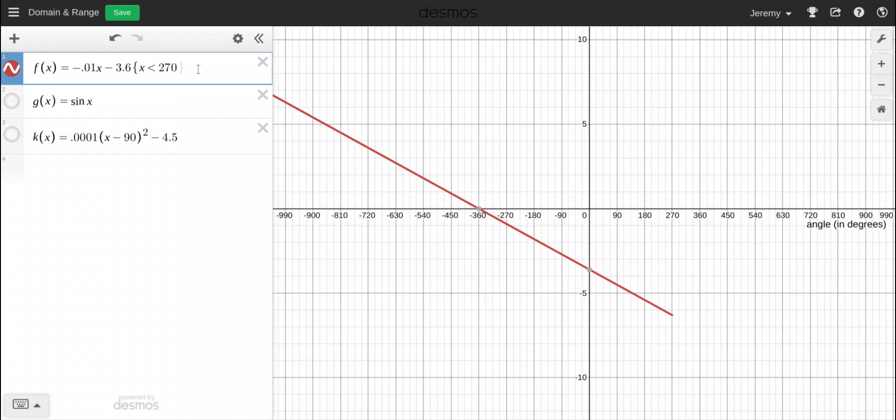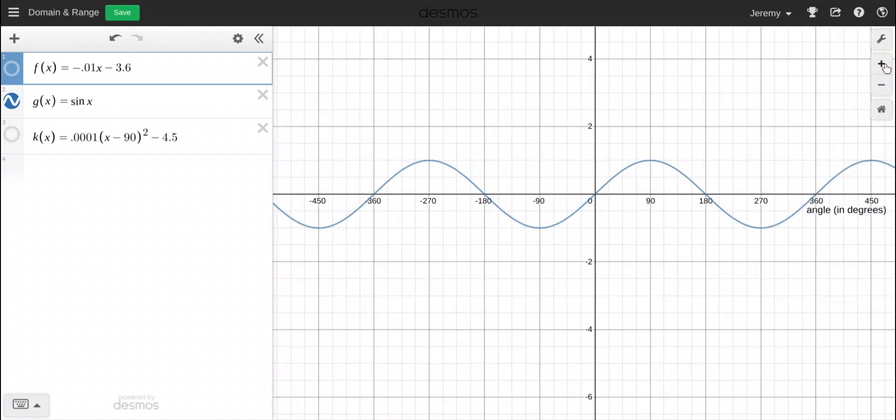So next I'm going to turn off this linear function and turn on this trigonometric function, the sinusoidal function. So what do you think happens if I restrict the range of this function? The range is the set of all possible Y values. Right now, the domain of this sinusoidal function is all real numbers. It's going to keep going infinitely to the left and infinitely to the right.